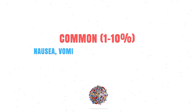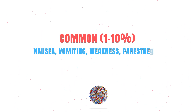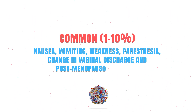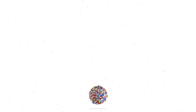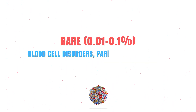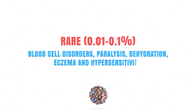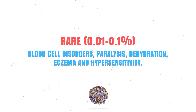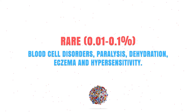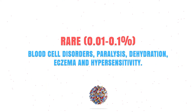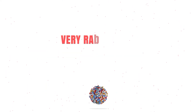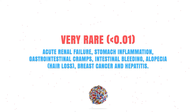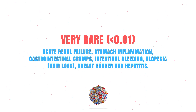Commonly it can cause nausea, vomiting, weakness, or postmenopausal bleeding. Rarely it can cause blood cell disorders, paralysis, or dehydration. Very rarely it can cause acute adrenal failure, stomach inflammation, or intestinal bleeding.